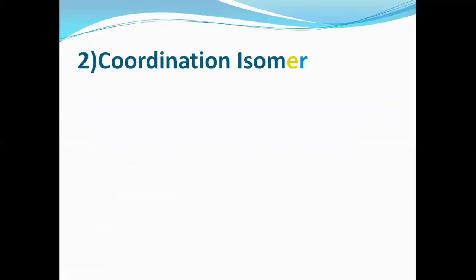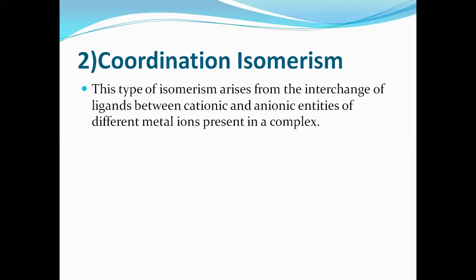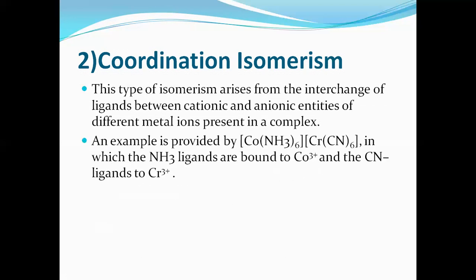The second category is coordination isomerism. In coordination isomerism, two or more complexes having the same molecular formula differ in the coordination of the central metal atom with the ligand. That means an exchange or interchange of ligands between the central metal atoms takes place. For example, in cobalt hexacyanochromate, cobalt is linked with amine and chromium is linked with cyanide.